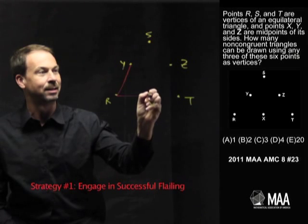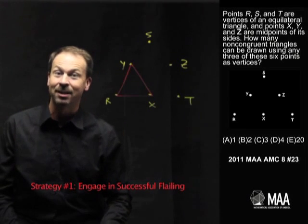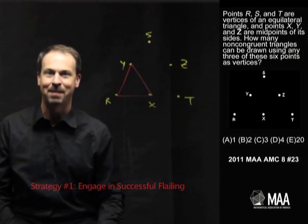For example, make triangles by connecting the points. There is definitely one triangle. So the answer is at least one non-congruent triangle to be made in this diagram.